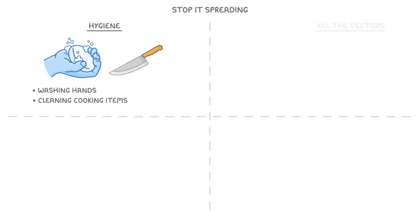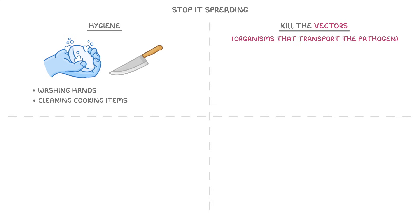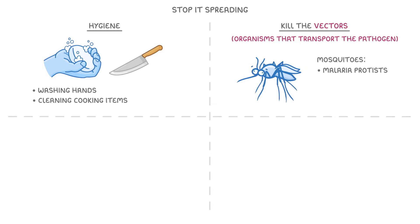In some cases, we can kill the vectors of the pathogens, which are the organisms that transport the pathogen, such as mosquitoes, which transport the malaria protists. In the case of insect vectors, the easiest way to do this is by spreading insecticides, which are chemicals which kill insects.